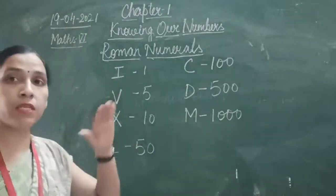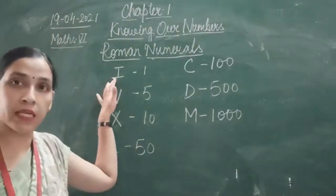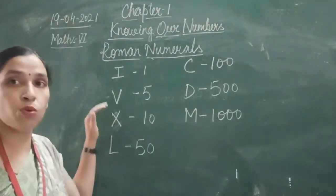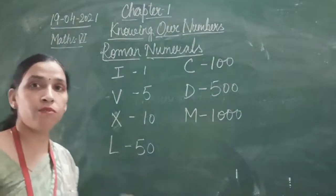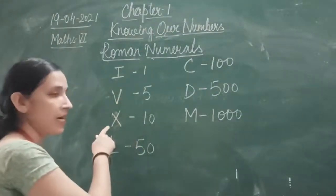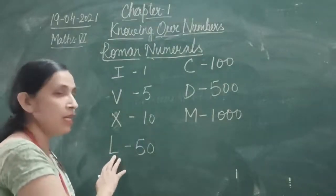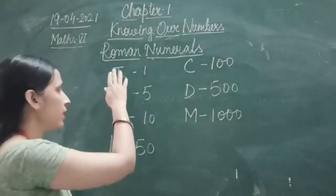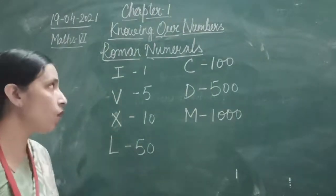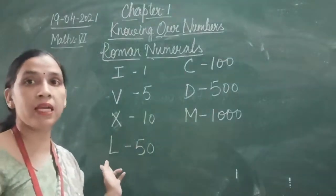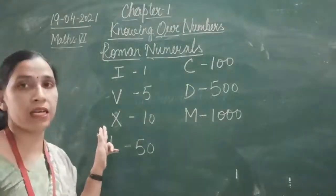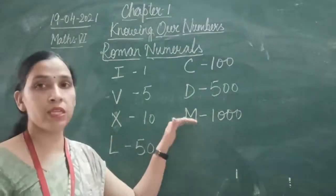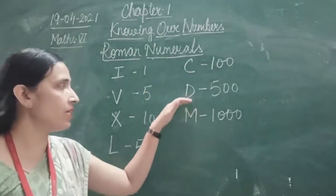From I, you cannot subtract anything. From V and X, you can subtract only I. From L, you can subtract X, but you cannot subtract V. From C and L, you can subtract X. From D, you can subtract C, but you cannot subtract L or X. From M, you can subtract C. So from D and M, you can subtract only C.